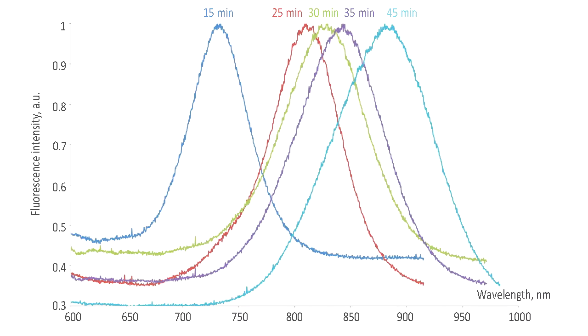As the shell is grown, we can see the emission peak shift from about 700 nm to about 850, which is where we usually stop it. This correlates to a shell of about 2 nm.